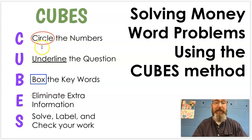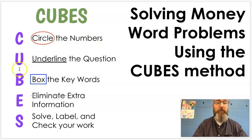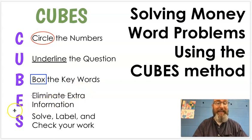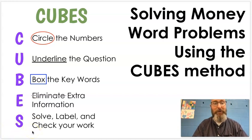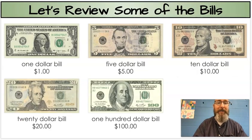We have C, which means circle the numbers. Feel free to read it with me. U is underline the question. B, box the keywords. E, eliminate extra information. S, solve, label, and check your work. We'll need to remember those today. I will have it in all of our problems, so you'll be able to see it for a reminder.